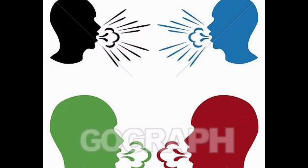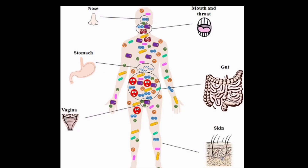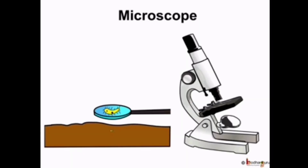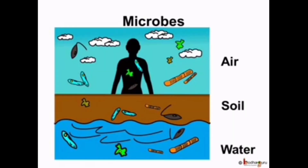Germs enter the body of a healthy person when he or she comes in contact with an infected person. The germs start growing and reproducing inside the body, increasing in number and causing damage to body cells. These germs cannot be seen with the naked eye because they are very small — they can only be seen under a microscope. Germs are carried from a sick person to a healthy person either by direct contact or through air, food, water, or insects.